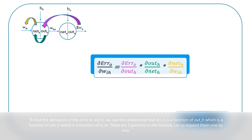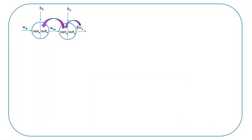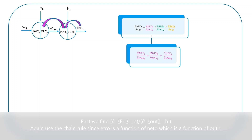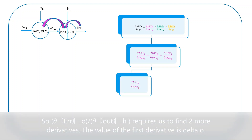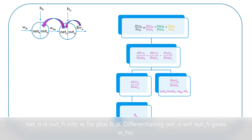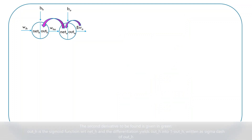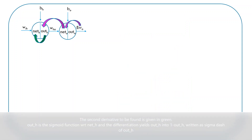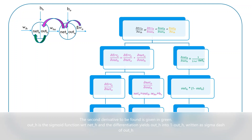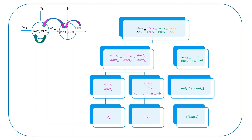There are three portions in the formula. Let us expand them one by one. First, we find ∂errorO / ∂outH. Again, we use the chain rule since error O is a function of netO, which is a function of outH. The value of the first derivative is delta O, and since netO = outH * WHO + BO, differentiating netO with respect to outH gives WHO. The second derivative, given in green, is the sigmoid derivative of outH: outH * (1 - outH), written as sigma dash of outH.